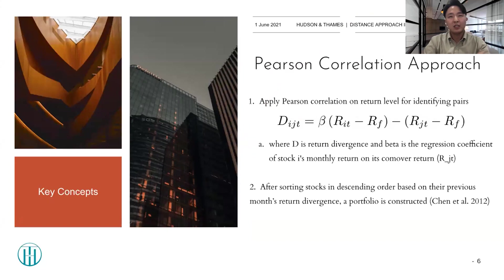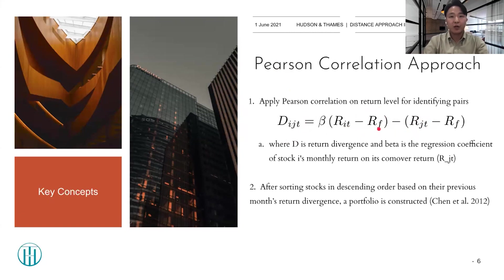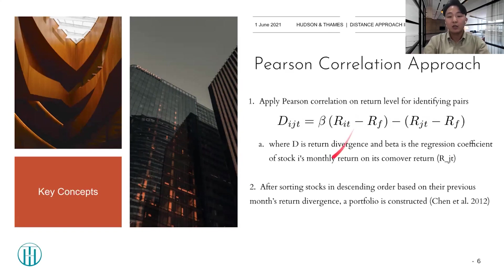As the name implies, the Pearson correlation approach applies Pearson correlation on the return level for identifying pairs. Take a look at the equation in the slide. D is return divergence, and beta is the regression coefficient of stock I's monthly return on each co-mover return, noted as RJ. RF is the risk-free rate. I'll go deeper later in the presentation. Using this equation, we sort stocks in descending order based on their previous month's return divergence, and then a portfolio is constructed for trading.